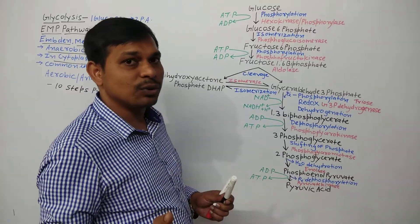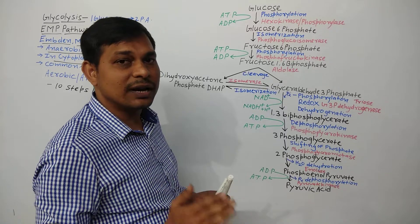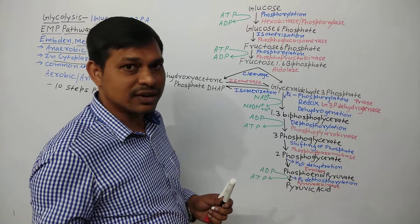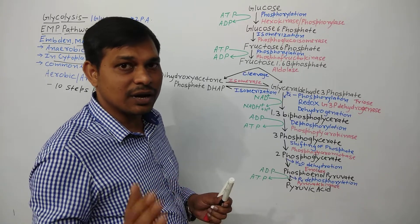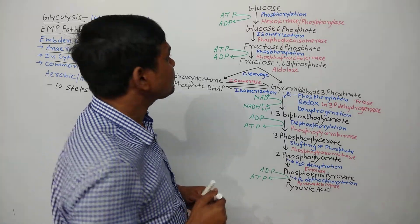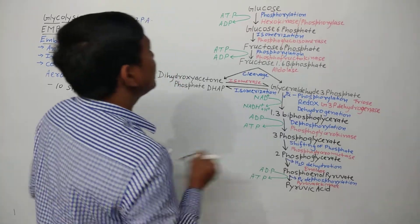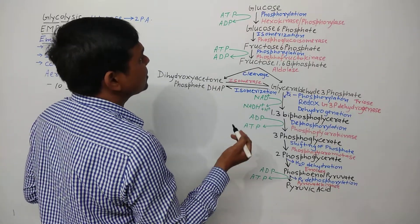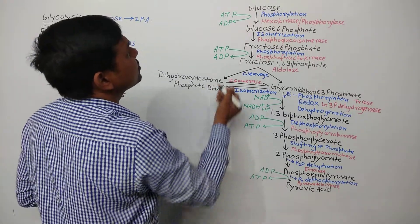Glycolysis is a 10-step process. The first five steps are called the energy investment phase, and the last five steps are called the energy payoff phase, because in the last five steps ATP is generated and produced.